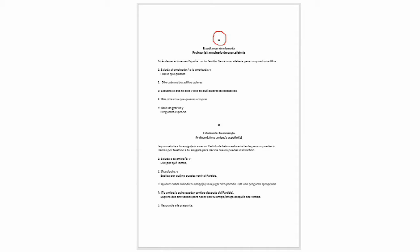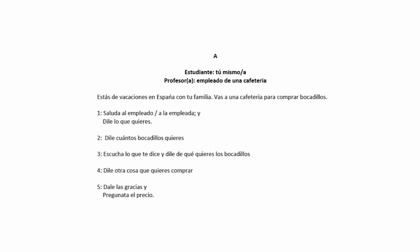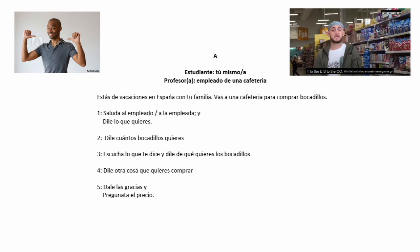The roleplay card looks something like this. It is split into two sections — Section A, which is easier, and Section B, which is slightly more tricky. Taking this example, in Section A you are yourself and your teacher is an employee at a cafe. The description says you are on holiday in Spain with your family and you go to a cafe to buy sandwiches. You're given a script which tells you every step of how the conversation is going to go.